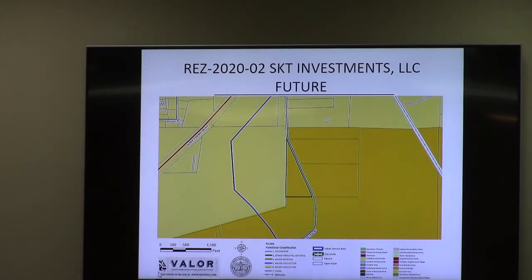Any questions for staff? I've got a quick one — I thought the two and a half acres would only place one house on two and a half acres. You can put two dwellings on two and a half acres.